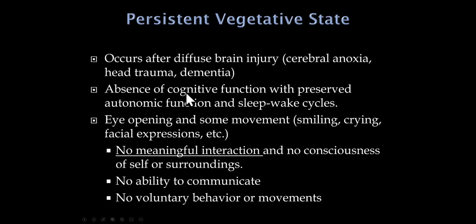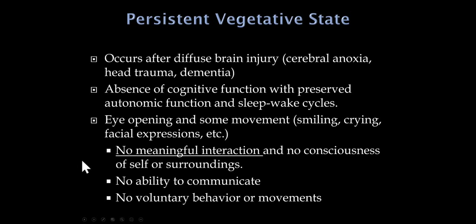Persistent vegetative state: the three most common causes are cerebral anoxia, severe head trauma, and advanced dementia. There is diffuse cortical neuronal damage, but lower brainstem areas controlling blood pressure, pulse, breathing, and sleep-wake cycles are preserved. The patient has no meaningful interaction with the environment, but may spontaneously open their eyes, smile, have facial expressions, or move arms and legs — though never consistently in response to what's happening.